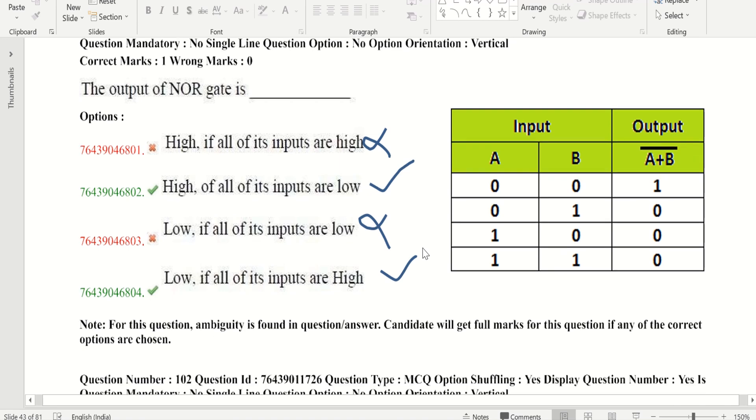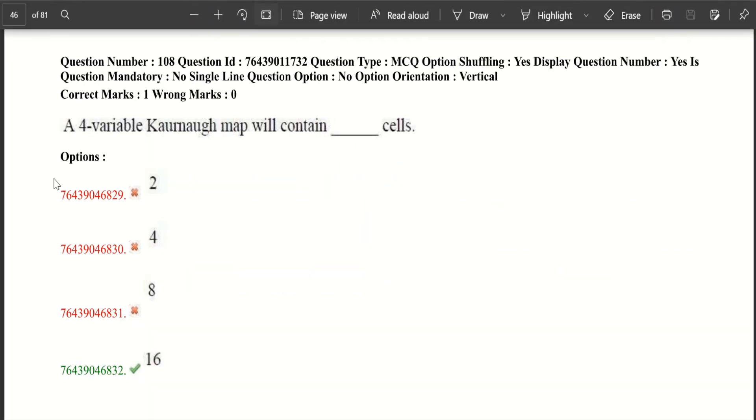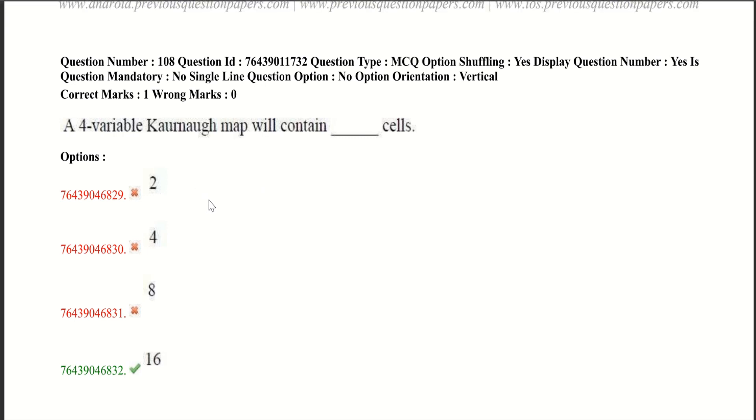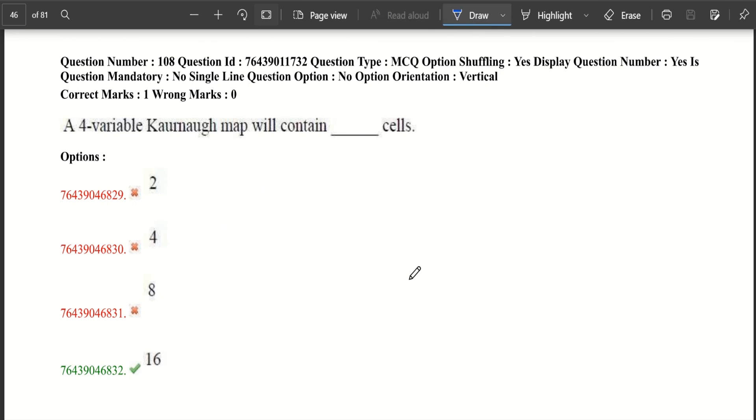Now let's move to the next question. A four variable Karnaugh map contains dash cells. K-map is one of the most important concepts in DE. In this question, we can solve it in two ways. First, using the formula. That is, if we have n variables, then the number of cells is 2 power n.